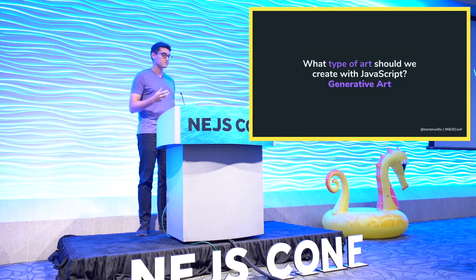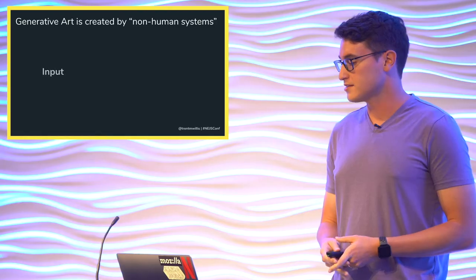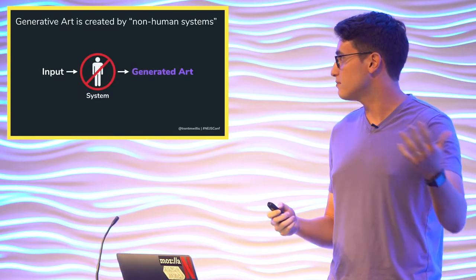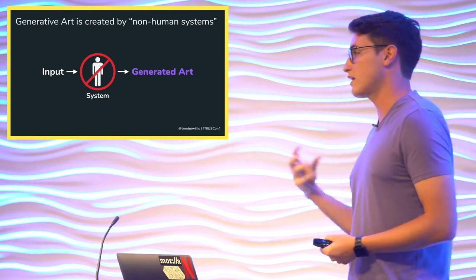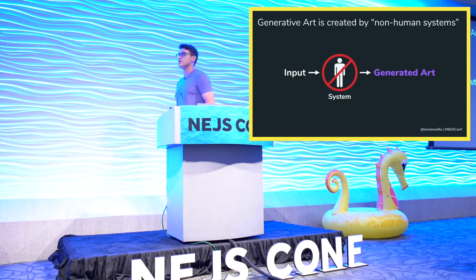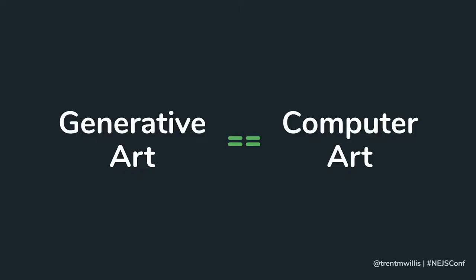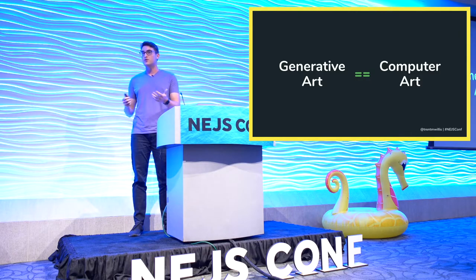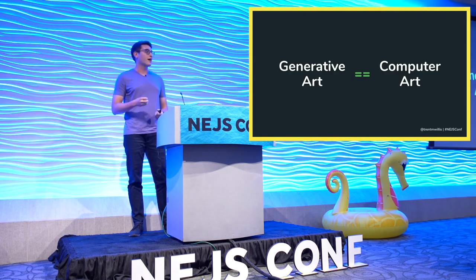The type of art we're talking about today is known as generative art. Generative art is simply art that is created by a non-human system — it's not created directly by humans or artists. Basically, you give a system some inputs and out the other side you get generated art without you having to make all the decisions about what that art is going to look like, where things are positioned, what colors are used, and so forth.